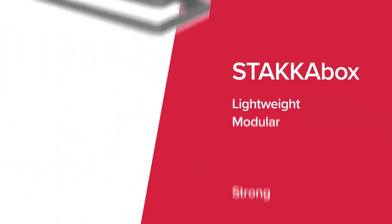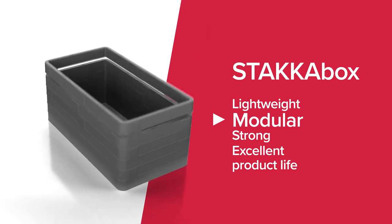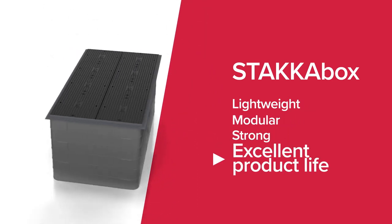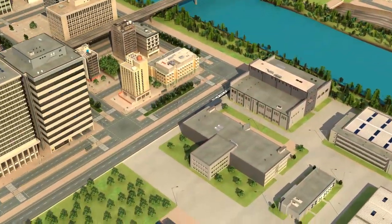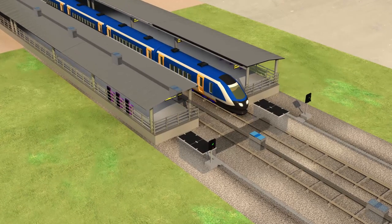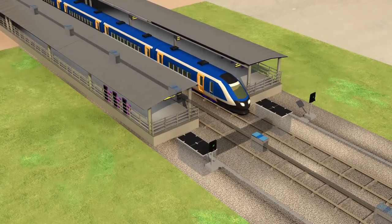StackerBox is a range of lightweight, modular access chambers that are strong and offer excellent product life. For rail, our easy-to-deploy products for trackside network access, drainage and undertrack crossings can significantly reduce track possession times.